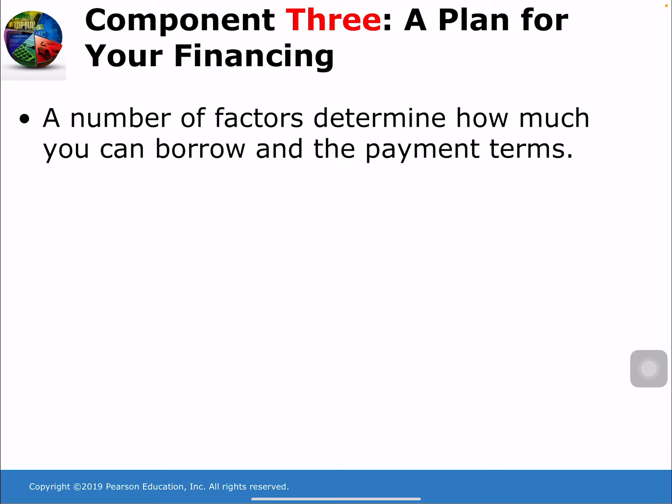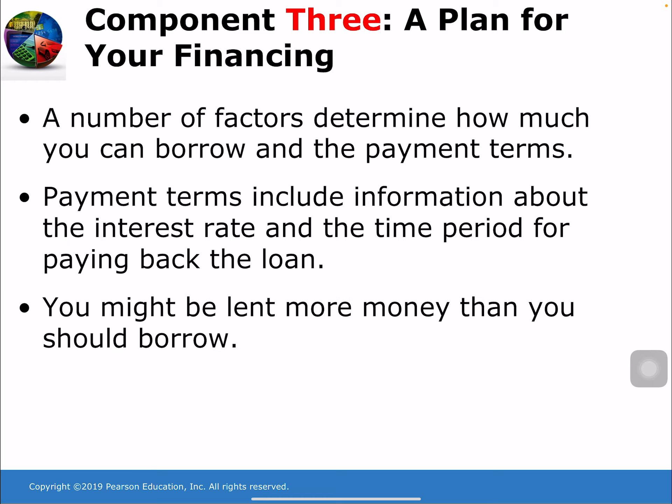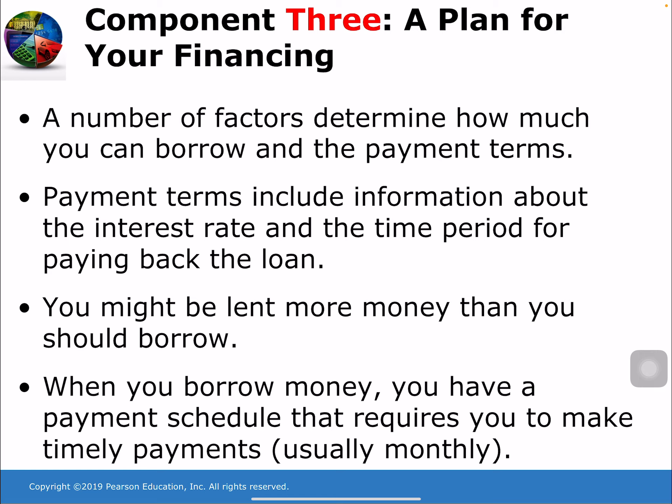A number of factors determine how much money you can borrow and the payment terms. Payment terms include information about the interest rate and the time period for paying back the loan — for example, a house loan might be paid back over 20 or 30 years. You might be lent more money than you should borrow, since lenders make their money by charging you interest. When you borrow money, you have a payment schedule that requires timely payments, and lenders will determine how much they feel you can pay back in a given period.